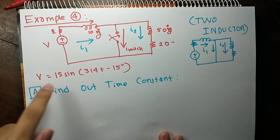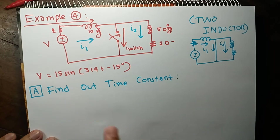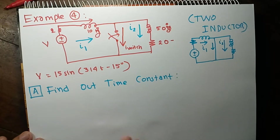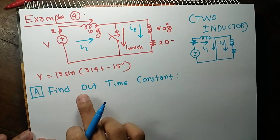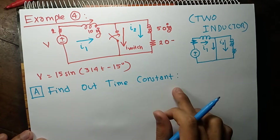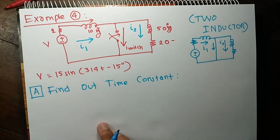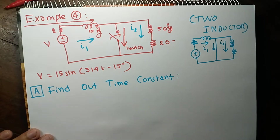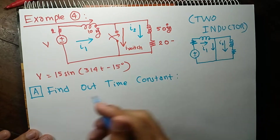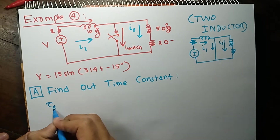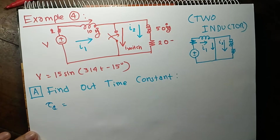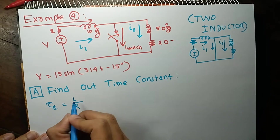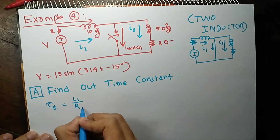The voltage has this kind of form. Now we will go through the working procedure. The first step is to find out the time constant. As we want to find out two currents, there will be two time constants. Time constant τ₁ will be L1 over R1.